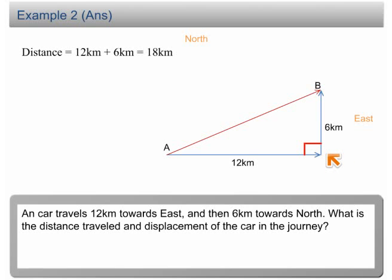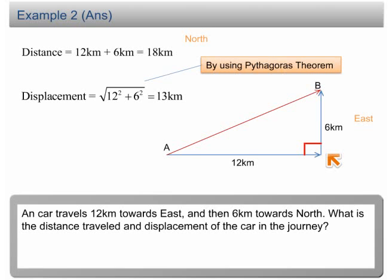Therefore, we can find AB by using Pythagoras theorem. By using Pythagoras theorem, the displacement is equal to the root of 12 square plus 6 square, which is equal to 13km.